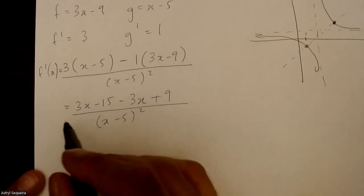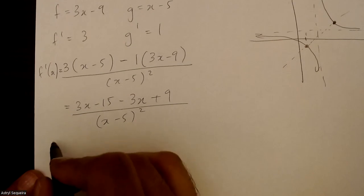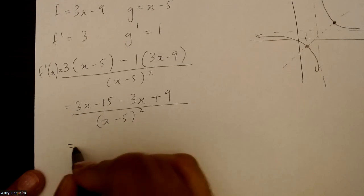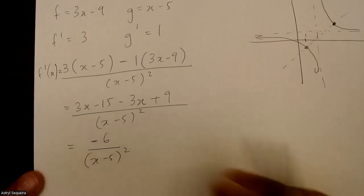And then we just have negative 6 over x minus 5 squared.